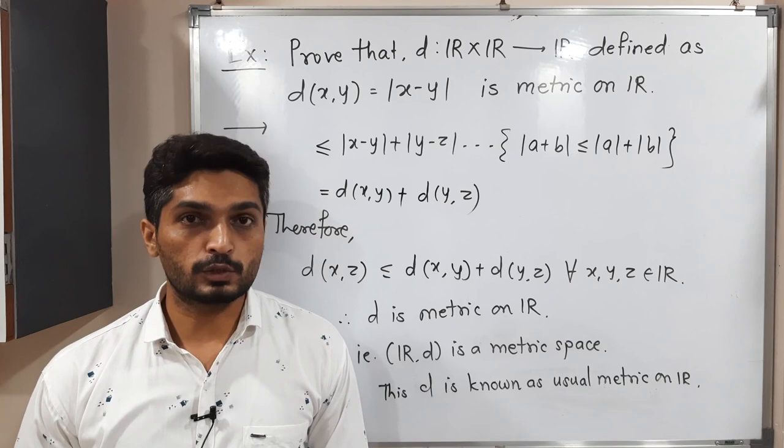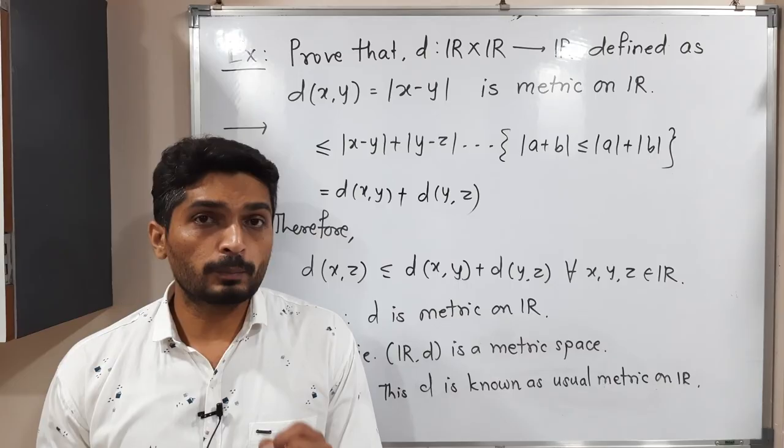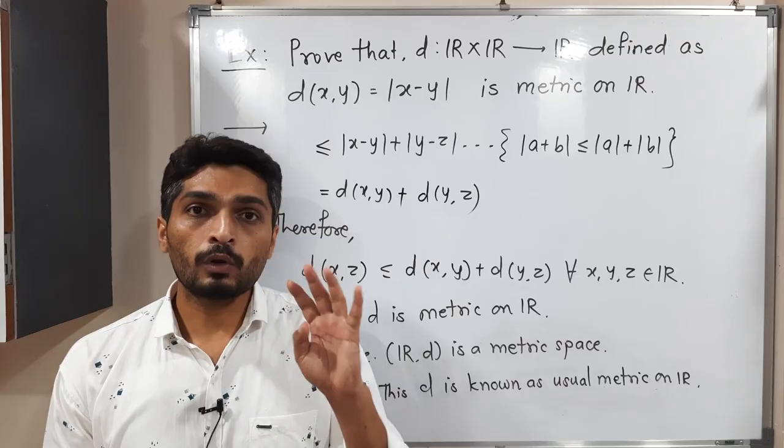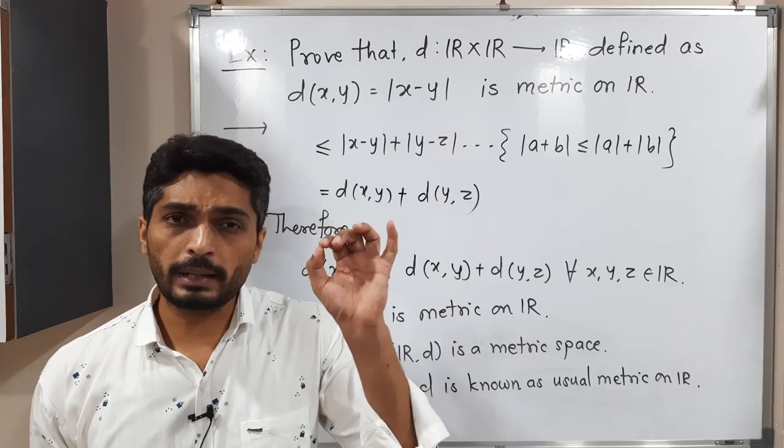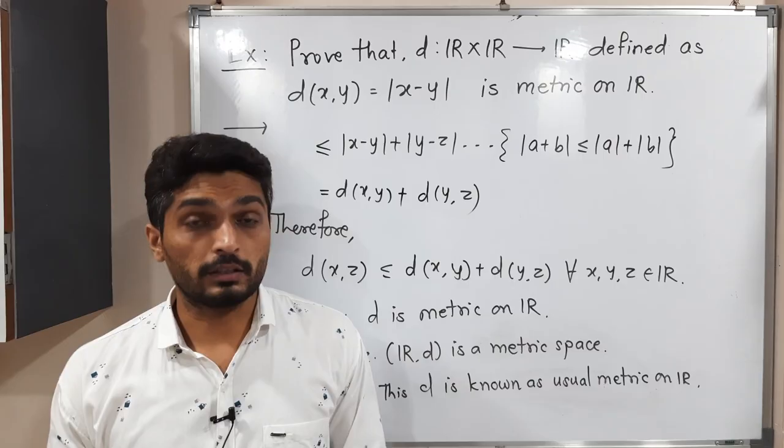When a problem asks us to prove that a function is a metric on R, we must prove it satisfies all four properties. But when asked to prove that something is not a metric, it is enough to find a single property that the function does not satisfy, and we can then declare it is not a metric on R.